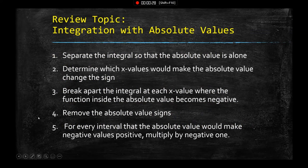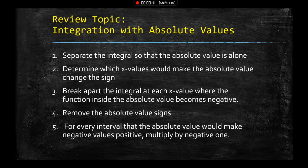For the review topic, I'm going to look at integration with absolute values. Anytime you're integrating with absolute values, you'll need to separate the integral. The first thing I do is figure out when the absolute value expression equals zero, so I can figure out over what intervals that part would be negative. We need to split the integral up around those points so that any interval that is negative we multiply by negative one to make it positive, then integrate normally.